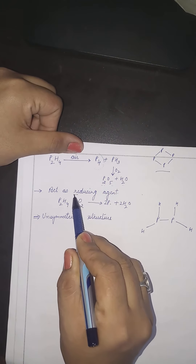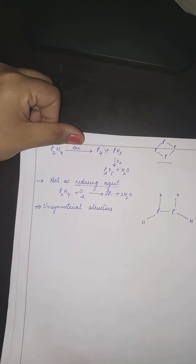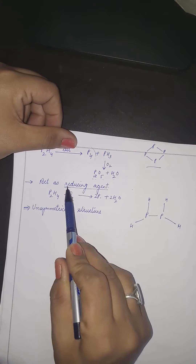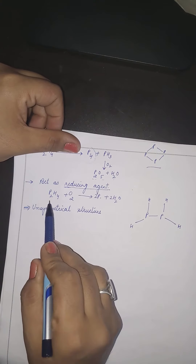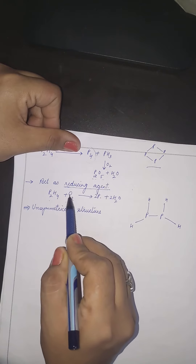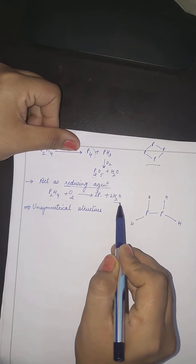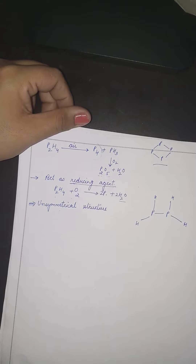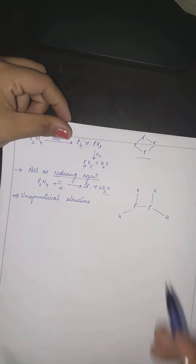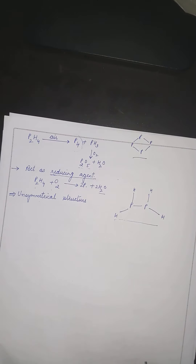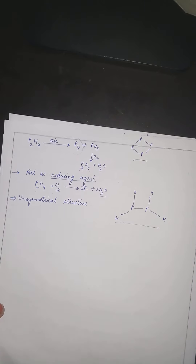Diphosphine (P₂H₄) ek reducing agent ki tarah behave karta hai — isne oxygen ko reduce kar diya, hydrogen de diya, aur paani ban gaya. Structure ke terms mein, P₂H₄ ka ek unsymmetrical structure hota hai. Yeh tha P₂H₄ (diphosphine) ke baare mein.